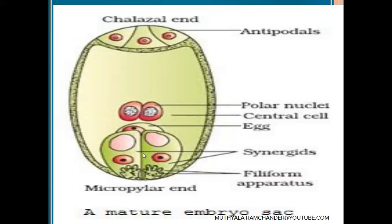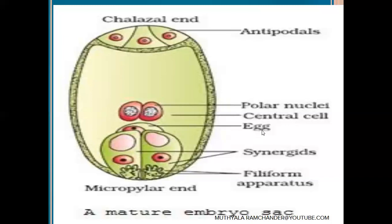The three cells at the micropylar region are called the egg apparatus. Among these three cells, the middle cell acts as the egg cell. It contains a haploid nucleus with cytoplasm, and a cell wall is present around the cytoplasm. It acts as the female gametophyte cell.